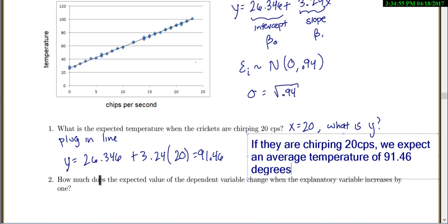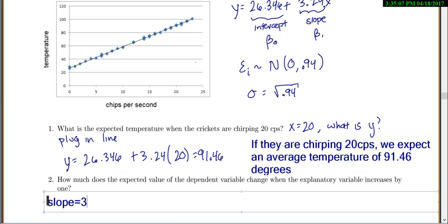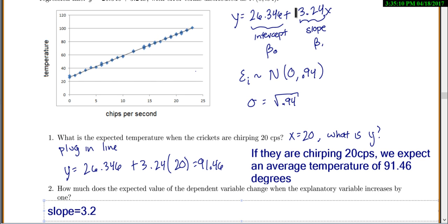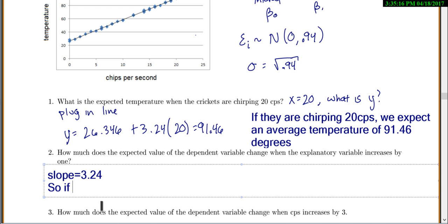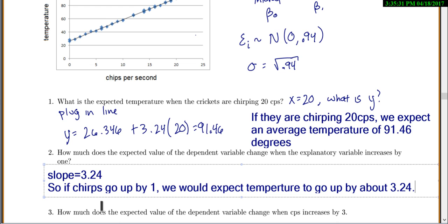Now this one says, how much does the expected value of the dependent variable change? Dependent means y. When the explanatory variable increases by 1. It's just asking you to find the slope. Slope equals 3.24. There's my slope, 3.24. What does this mean as interpretation? This is saying so if chirps go up by 1, we would expect temperature to go up by about 3.24. Now again, this is all just kind of based on average or about. It's not going to be exact because this is real life.